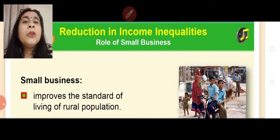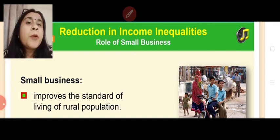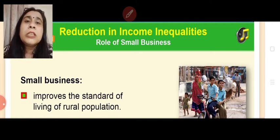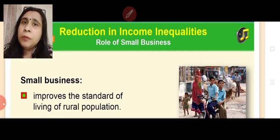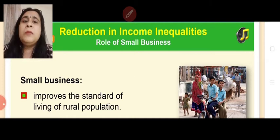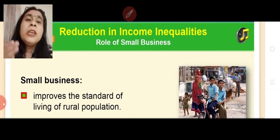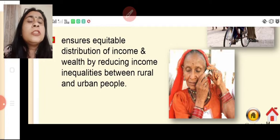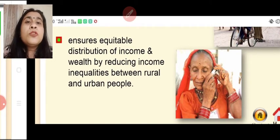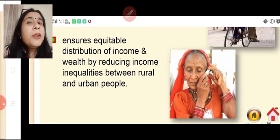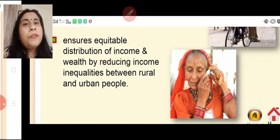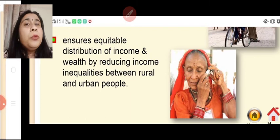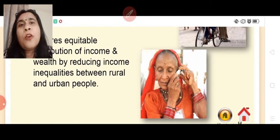Then we talk about reduction in income inequalities. Small businesses improve the standard of living of the rural population. Rural people with skills — artisans, pottery makers, tailors, candle makers — will start earning because they invest less. With their small investment they start earning, improving their economic conditions. Small enterprises ensure equitable distribution of income and wealth by reducing income inequalities between rural and urban people, as shown by the image on screen.